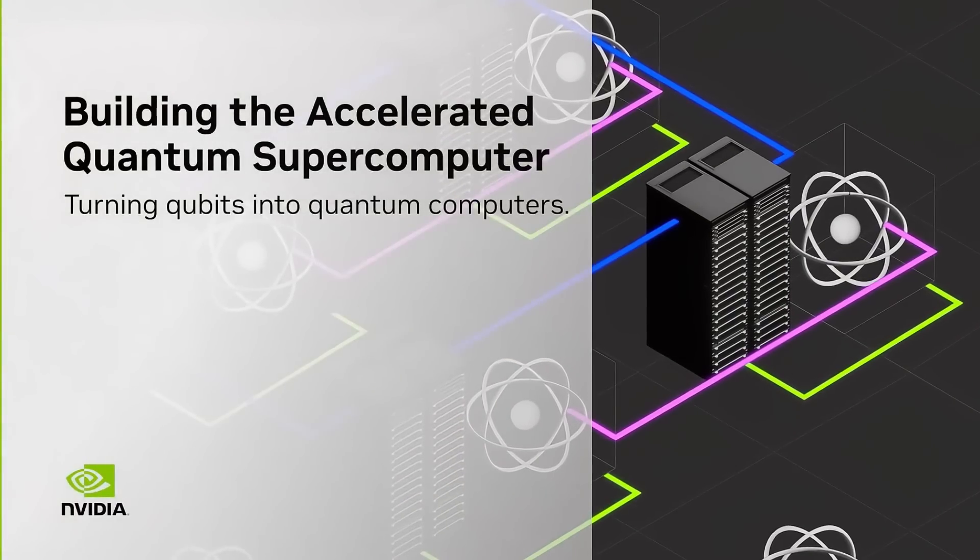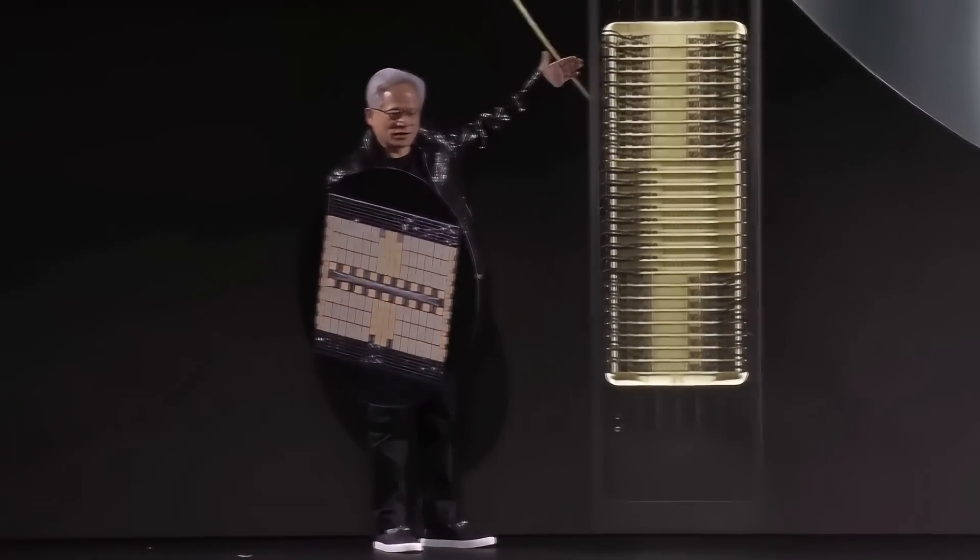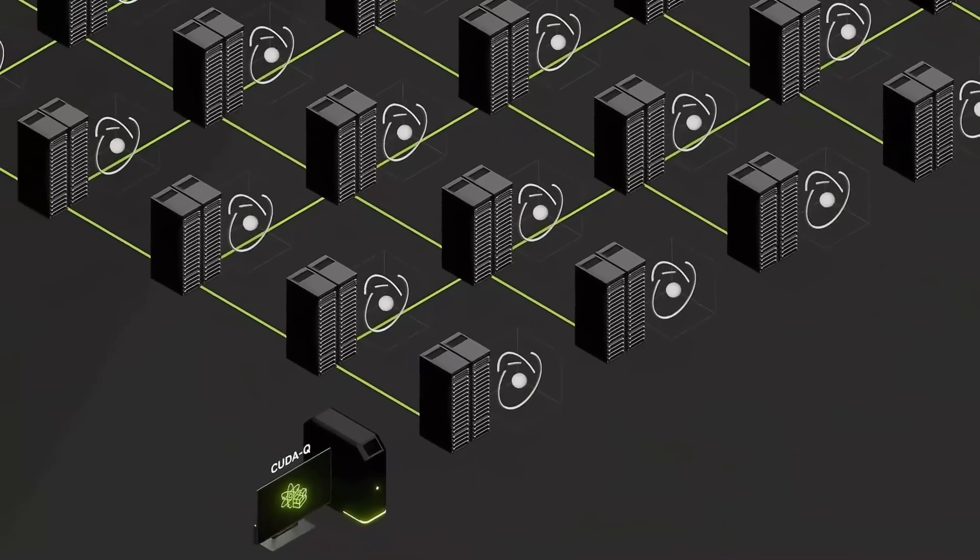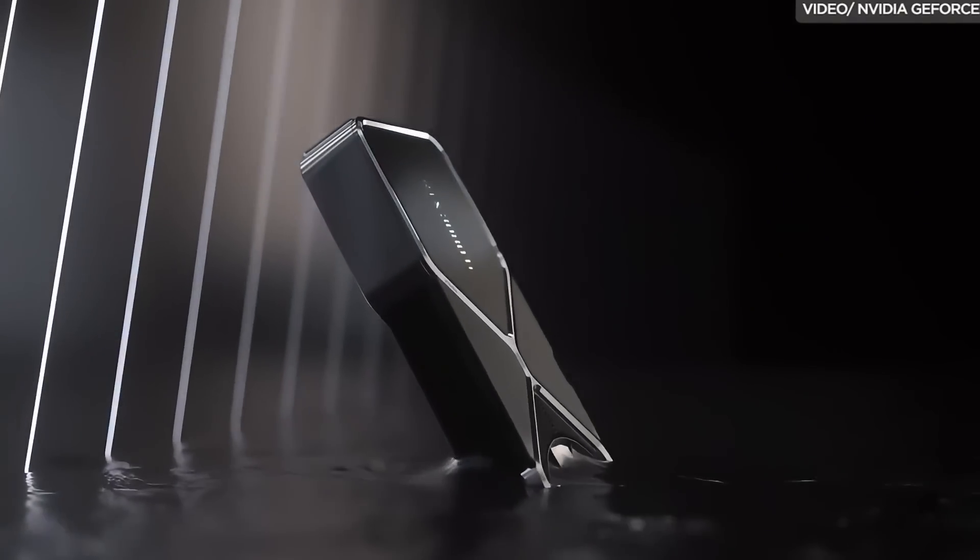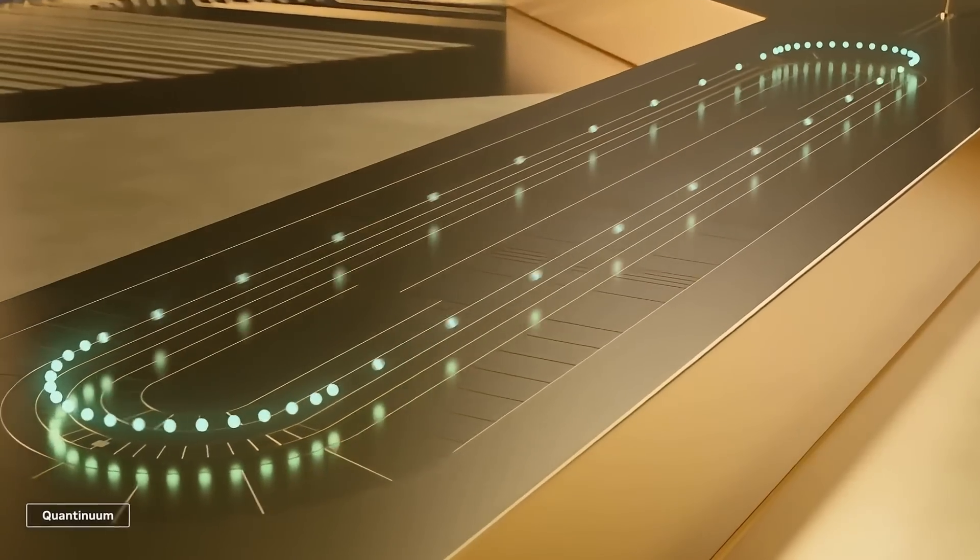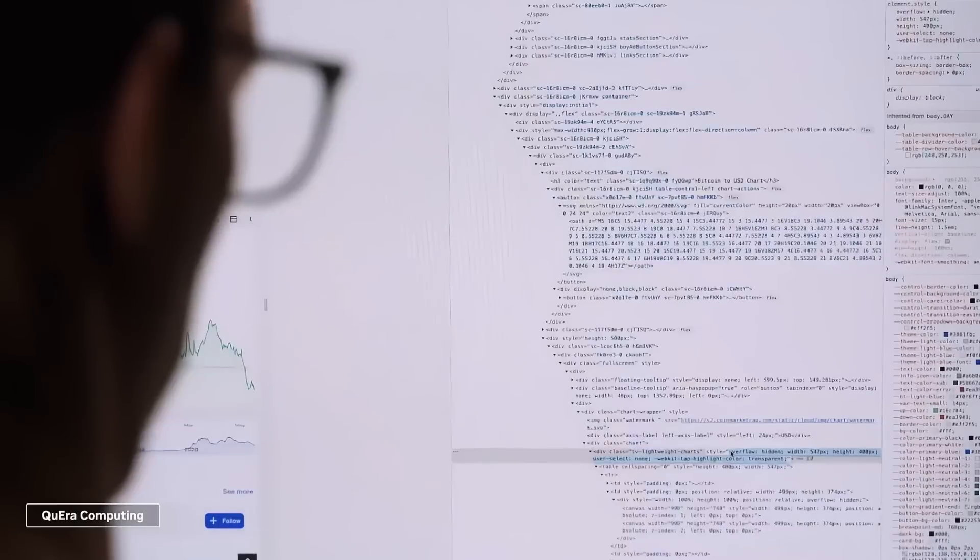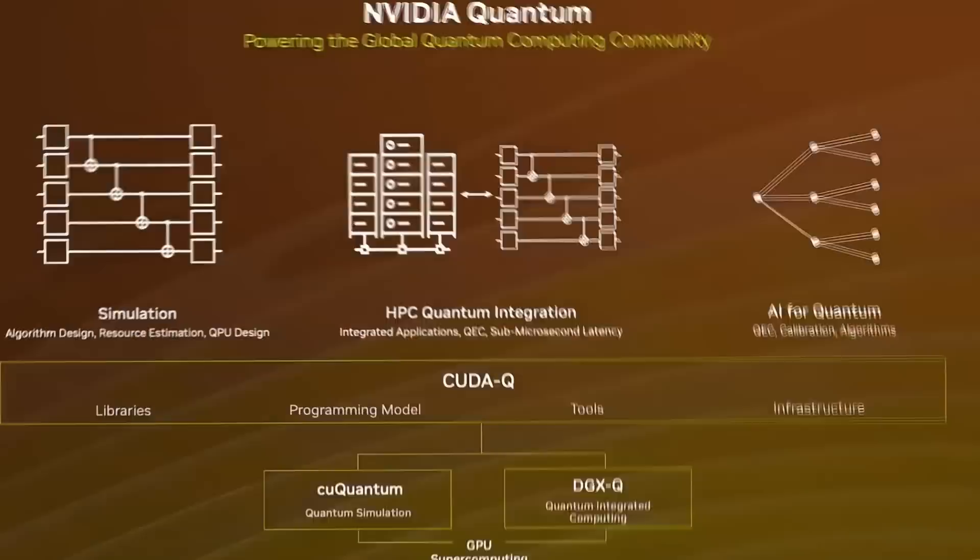By leveraging the principles of quantum mechanics, AI can now process millions of calculations simultaneously, eliminating many of the bottlenecks that have held AI back. NVIDIA is pioneering this transformation with TensorQ cores, specialized processors designed to integrate quantum computing with AI workloads. Unlike traditional GPUs, which process data sequentially, TensorQ cores allow AI models to operate in parallel across multiple quantum states, making them exponentially more efficient at solving complex problems. This could lead to AI systems that learn and evolve at an unprecedented rate, accelerating the path to artificial general intelligence, AGI.